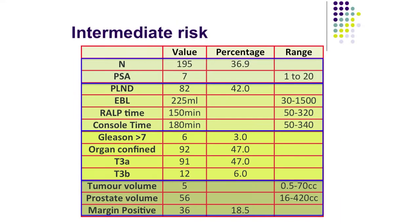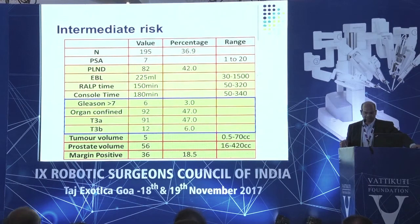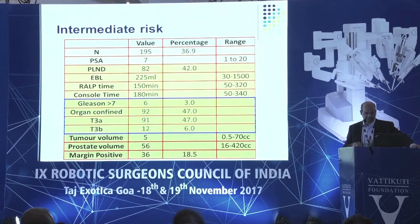The intermediate group — we call them intermediate because we don't know where they fit, whether low or high, and the numbers indicate that. PSA was 7. There was not much operative difference, but for the T3A rate — extracapsular extension — these were all clinical T2B stagings, and 47 to 53 percent of them had extracapsular disease. So including T3A and T3B, 53 percent of intermediate cancers have extracapsular disease. Tumor volume increases from 3 to 5cc, and the margin positive rate is 18.5 percent.